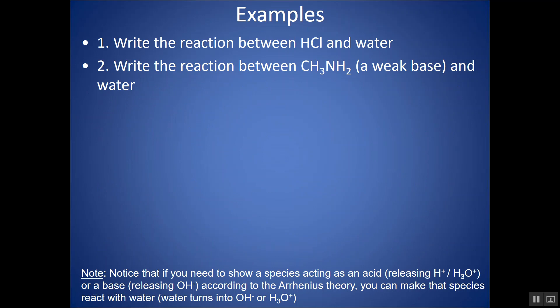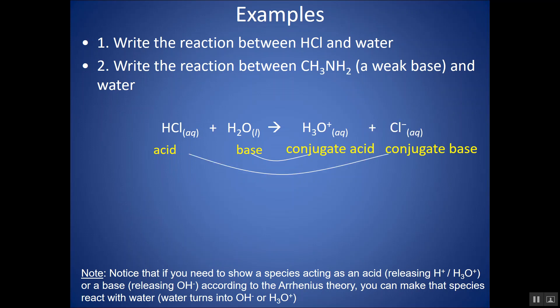Writing the reaction between HCl and water: HCl is the acid, water is the base. HCl donates H+ and the water picks it up, forming H3O+ and Cl-. Only a single forward arrow is used because HCl is a strong acid — the reaction goes to completion. Since HCl is such a strong acid, Cl- has negligible strength as a base and the reaction does not proceed in reverse.